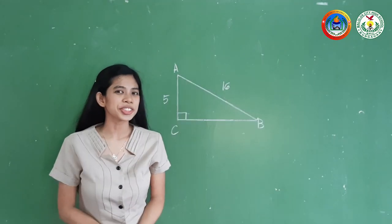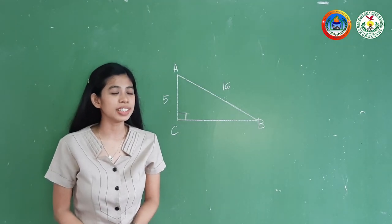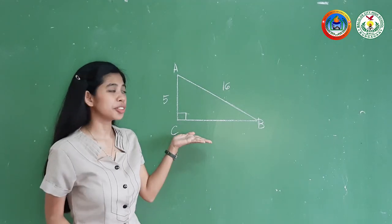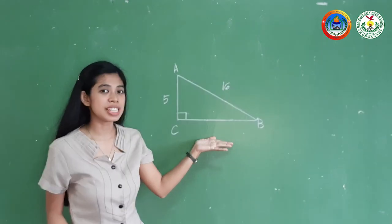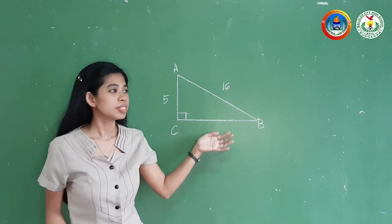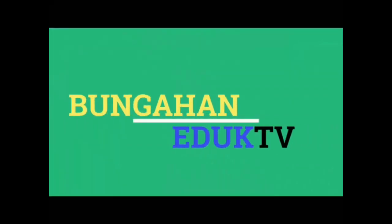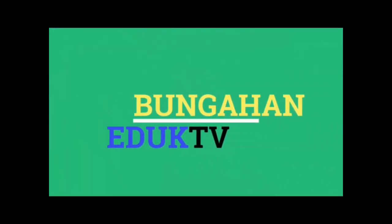Now it's your turn! For your activity, label the parts of the given right triangle and find the measure of the leg and the angles. Thank you so much for listening. This is Teacher Joy Lim, reminding you to embrace lifelong learning, spread love and positivity. Keep the faith. May God bless us all.